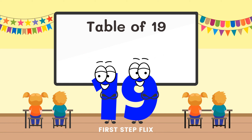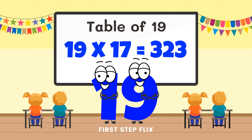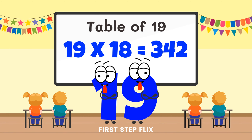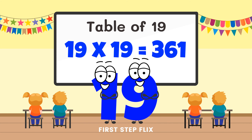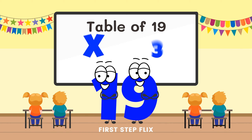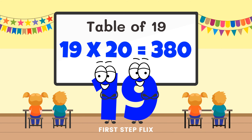19 seventeens are 323. 19 eighteens are 342. 19 nineteens are 361. 19 twenties are 380. Let's repeat one more time.